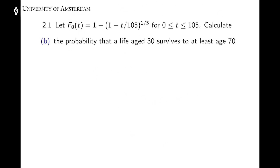Now in Part B, we want the probability that a life aged 30 survives to at least age 70. So we want a survival probability. Expressed in the notation we learned in class, what we want is the probability that somebody currently age 30 survives at least another 40 years to reach age 70. Because what we are given is the CDF for a newborn, we need to think carefully about how to calculate a probability for somebody who is age 30.